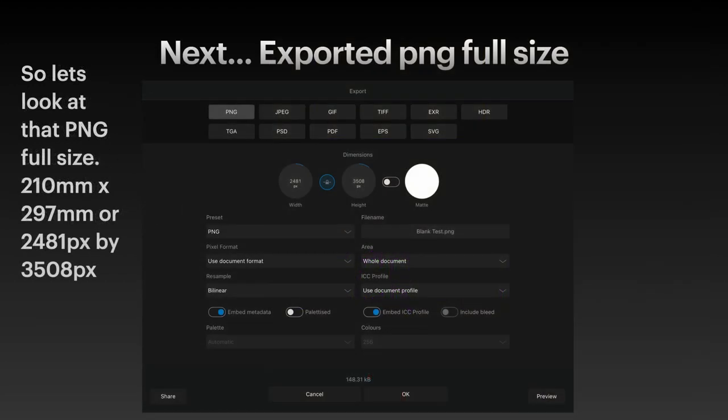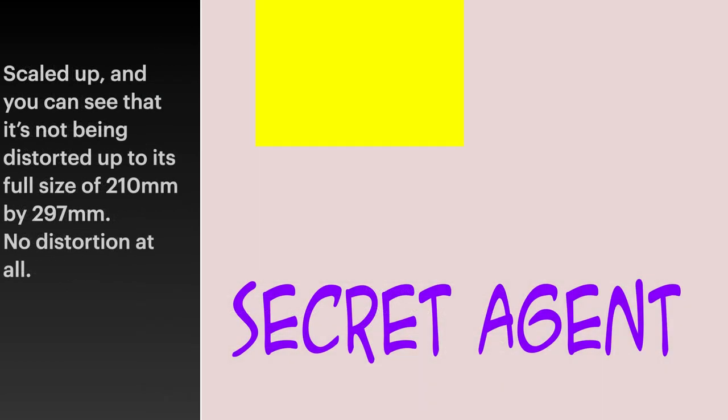Next, let's look at that same PNG exported full size — 210 by 297 millimeters, or 2481 pixels by 3508 pixels. That's a full A4 page PNG export. Scaled up, you can see it's not being distorted up to its full size of 210 by 297 — no distortion at all. But if you take it beyond that and make it A3 size, or A1 size as a broadsheet, it's going to go all jaggy, because you're taking the PNG file to a size it can't handle.